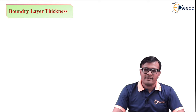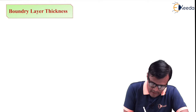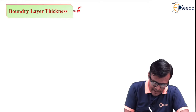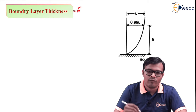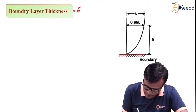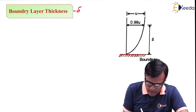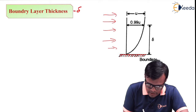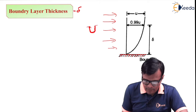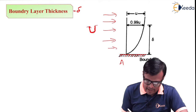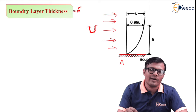Boundary layer thickness is denoted by the letter delta. It is a distance. We know that velocity distribution surrounding a boundary — say this is a stationary boundary and this is flow surrounding the boundary, which we call U. This is point A, the starting point, that is the leading edge, and we know that at that point velocity is zero.